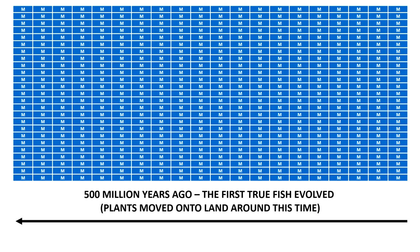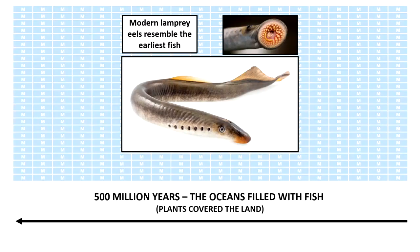Five hundred million years ago was a pretty significant time in evolution because of two major events. The first was that plants moved onto land around this time — plants evolved from simpler living things in the oceans and colonized the land. We imagine the earth covered in plants, but it was not always this way. We also imagine the ocean full of fish, but fish evolved from simpler animals — there was a time when the ocean was not full of fish.